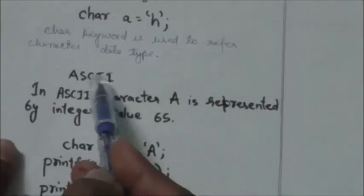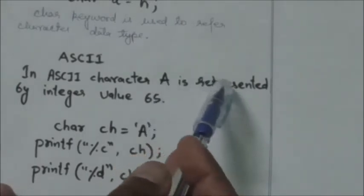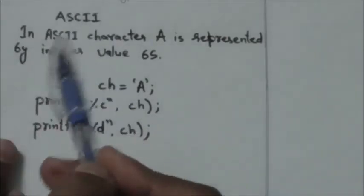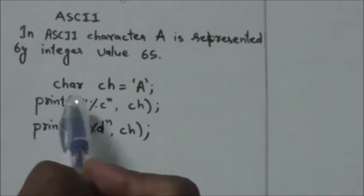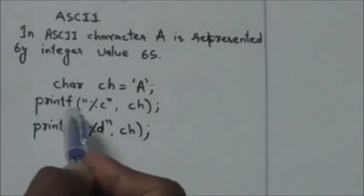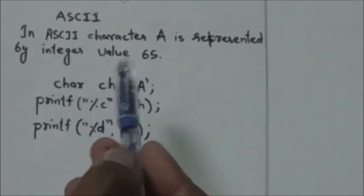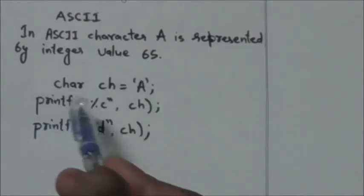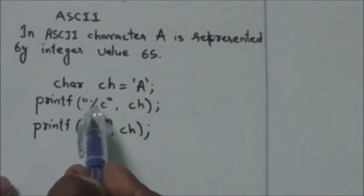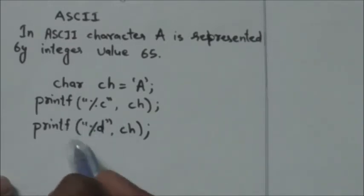To represent characters, the computer uses a numerical code to map each integer with the corresponding character. The most common numerical code is ASCII. In ASCII, the character capital A is represented by the integer number 65. When we use the printf function to print characters in C, there are two cases: if we use %c as a placeholder, the character will be printed; and if we use %d as a placeholder, its integer value is printed instead of the character.